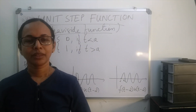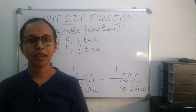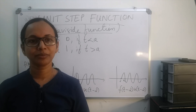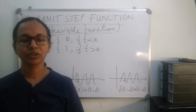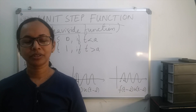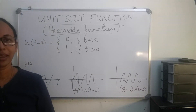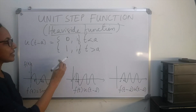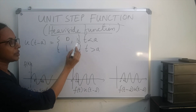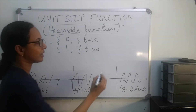We will discuss the unit step function, its properties, and its Laplace transform in this video. This is also known as the Heaviside function, named after British mathematician Oliver Heaviside. The unit step function is denoted by u(t − a) and is defined as 0 if t is less than a, and 1 if t is greater than a.